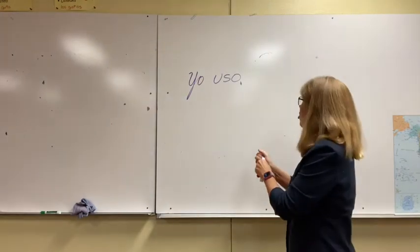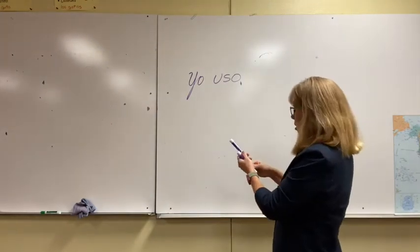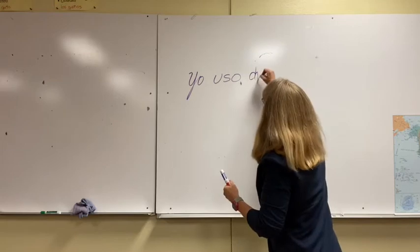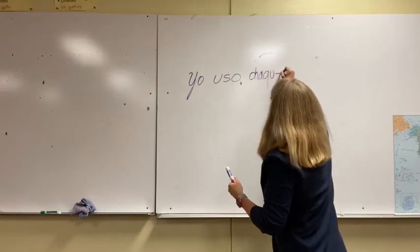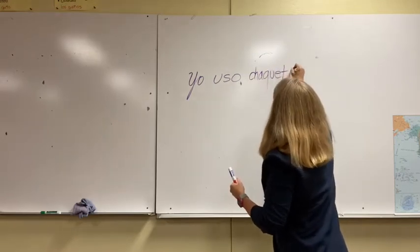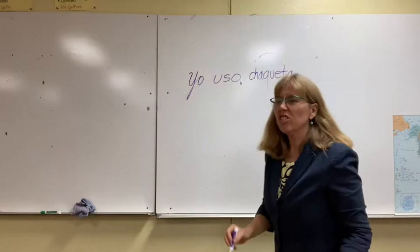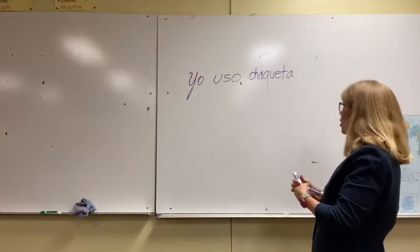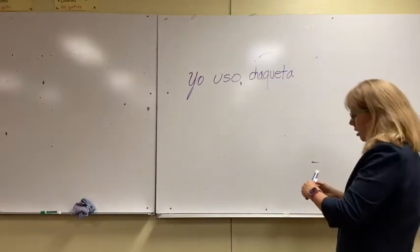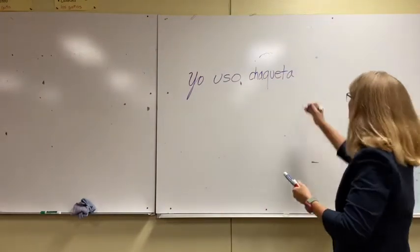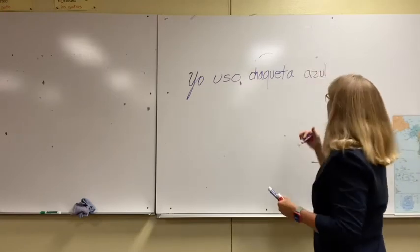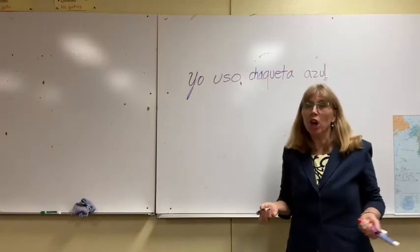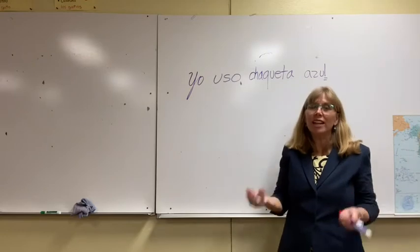I'm starting with a chaqueta, so I'm going to write chaqueta — clothing first. Once I've written chaqueta, I'm going to add the color, and the color is blue — azul. And azul ends in a letter other than O, so it's not going to change.